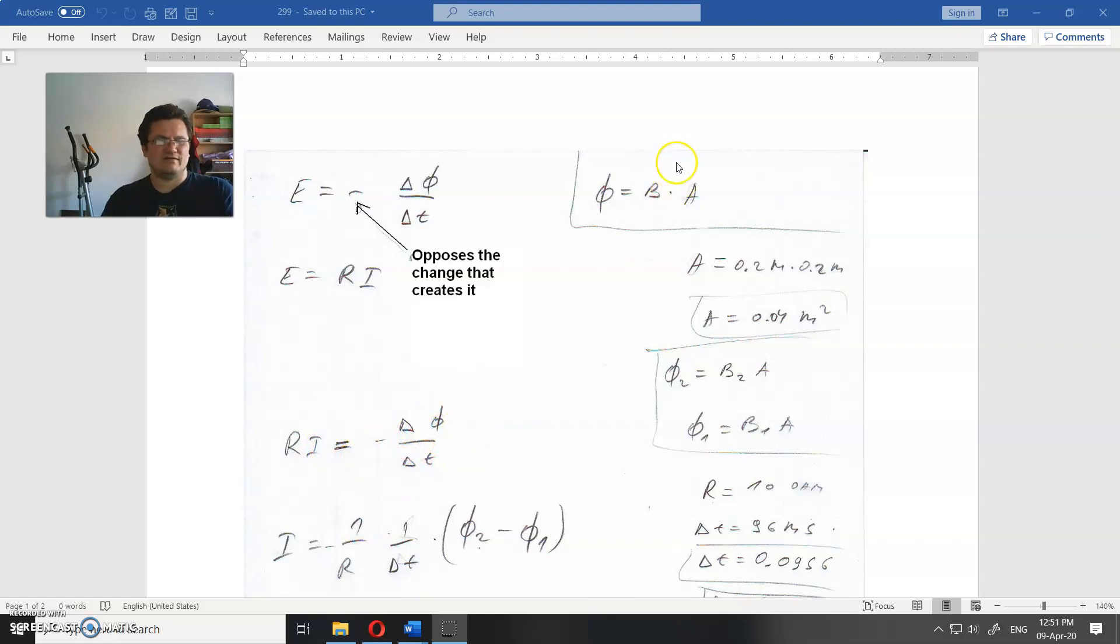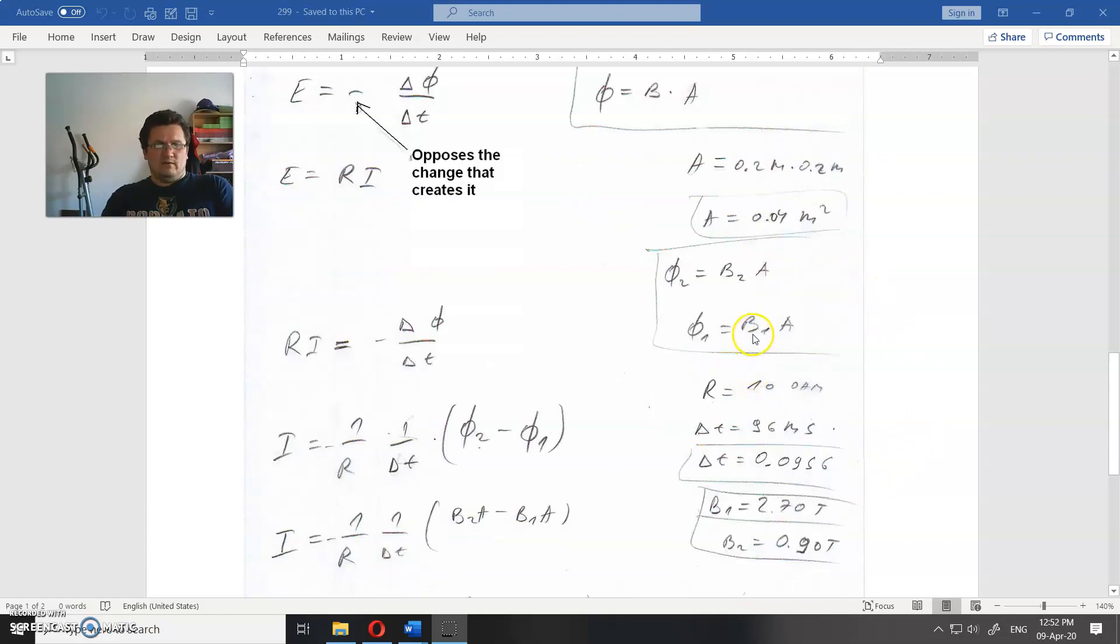What is the change of the flux? Flux is the magnetic field times the surface area. Surface area is the square of 0.2 meters times 0.2 meters. And magnetic fields B1 and B2. This is B1, 2.7. This is 0.9. So, now you have everything.